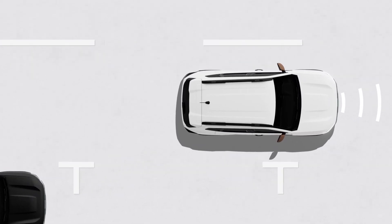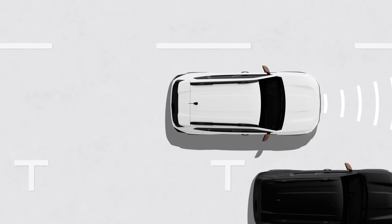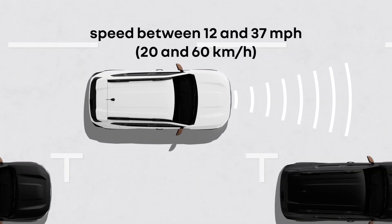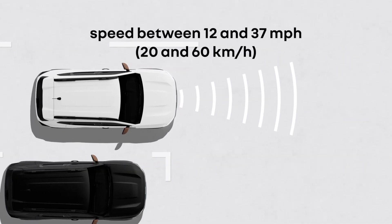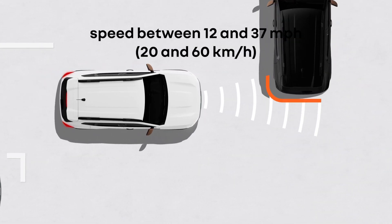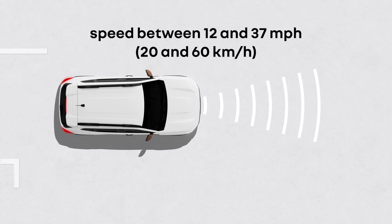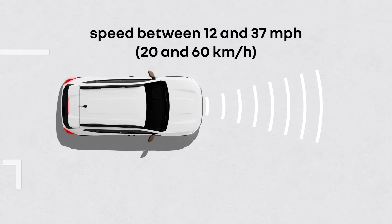Finally, vehicles crossing at right angles to your lane are detected when your speed is between 12 and 37 miles per hour (20 and 60 kilometers per hour).